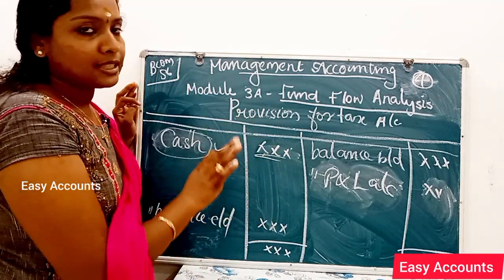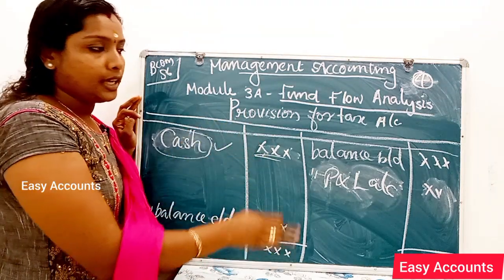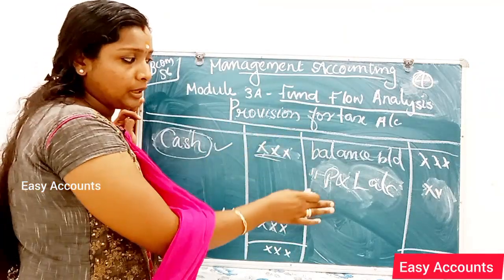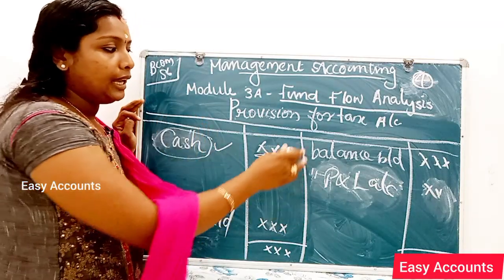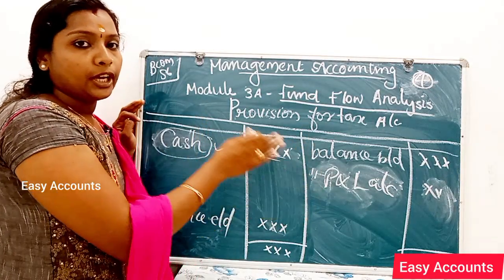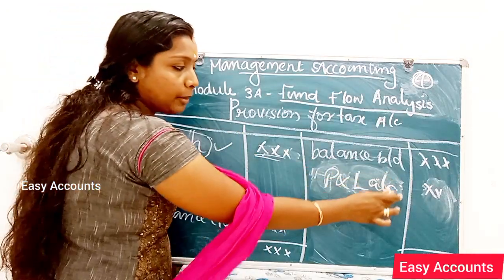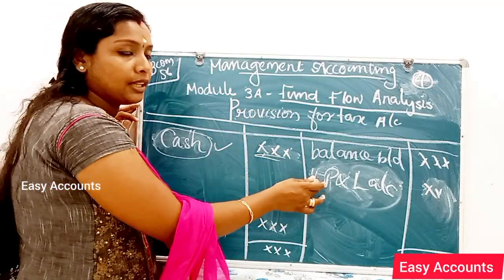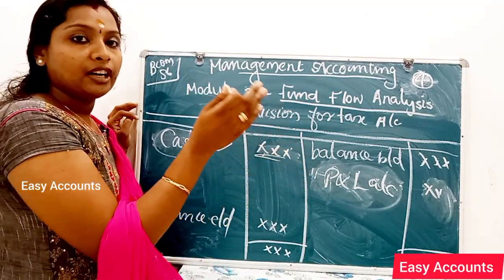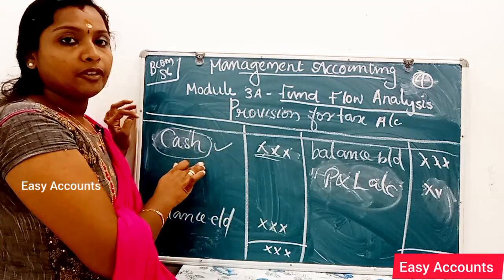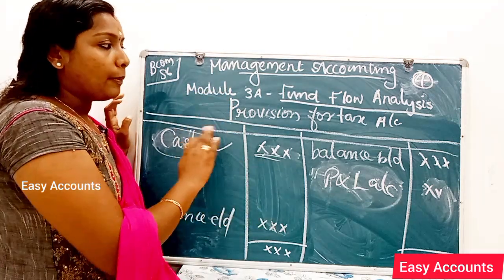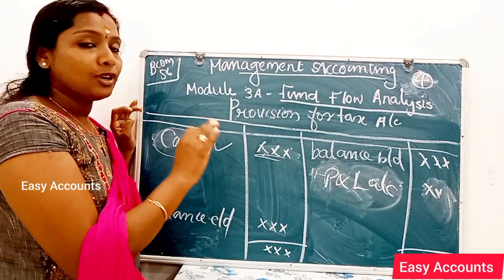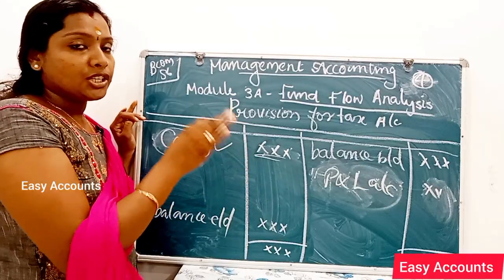This is how we treat the provision for tax. If we have the opening and closing balances, we can add additional information. The tax made during the year is credited to P&L. If the tax is not separately given, we send the fund from operations figure to the provision for tax as a non-current liability item, then include it in the schedule of changes in working capital.